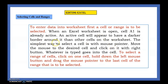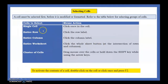To enter data into the worksheet, first the cell has to be selected. For a single cell, click once in the cell. For a row, click the row label. For a column, click the column label. For the whole worksheet, click the Select All button. For a cluster of cells, drag the mouse over the cells, or hold down the Shift key if selecting with the keyboard.